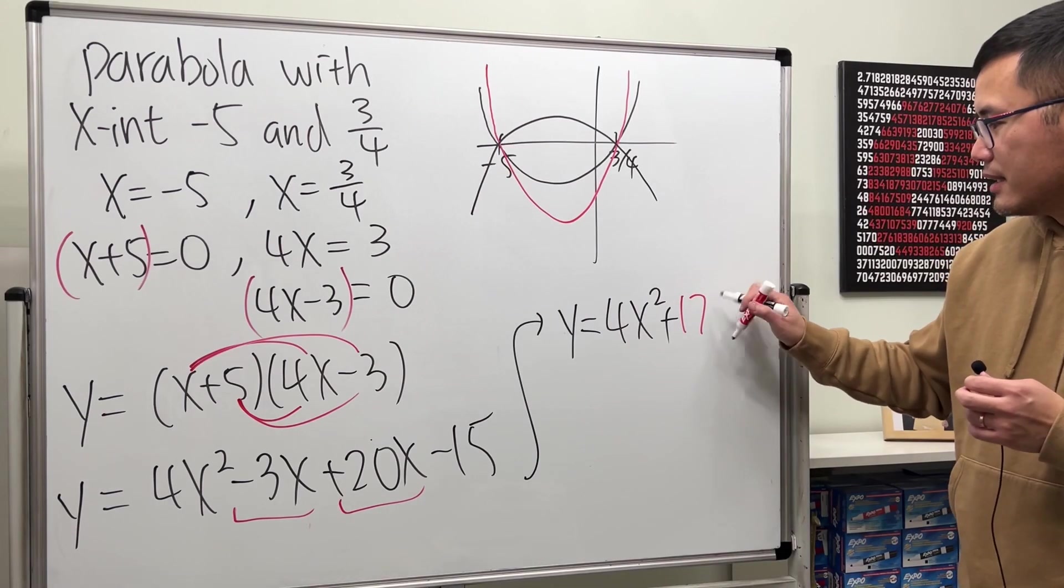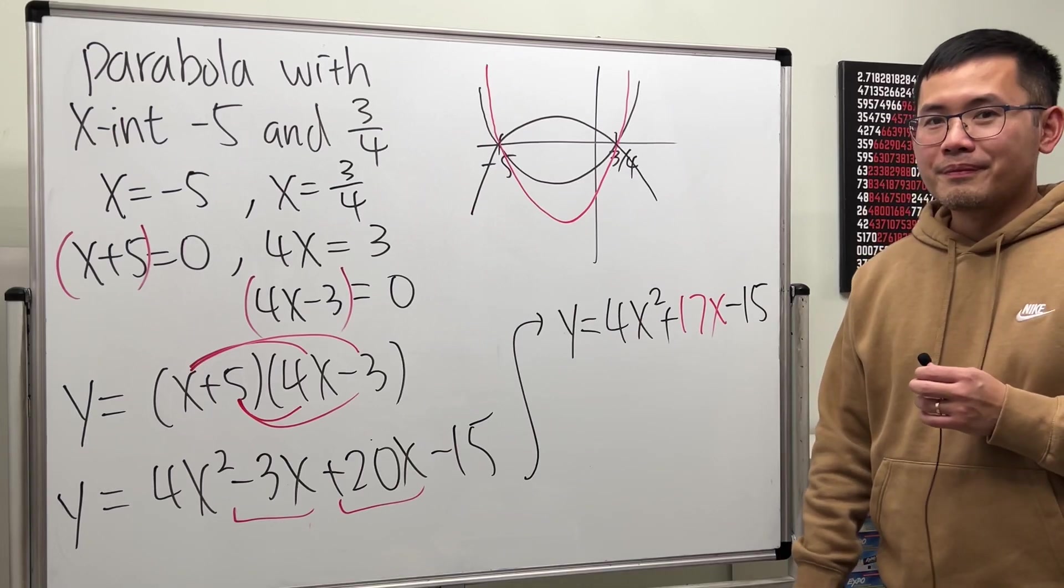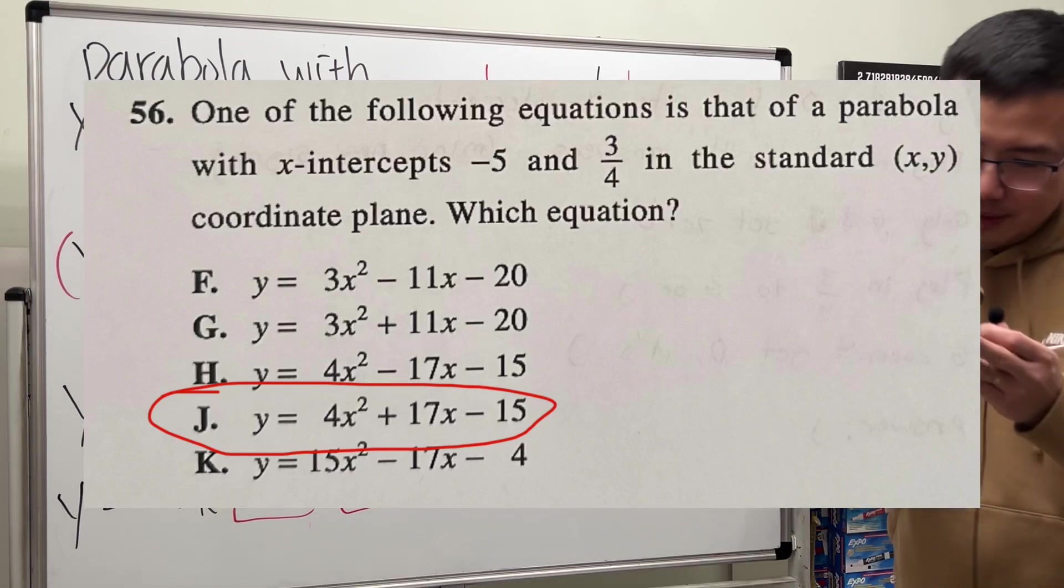y equals 4x squared plus 17x minus 15. Do we get the answer? Yes. As you can see, that is answer choice J.